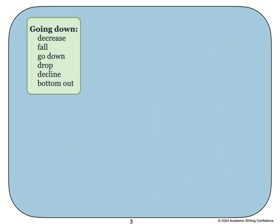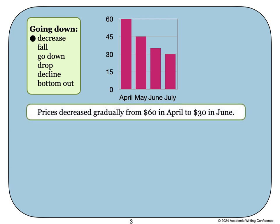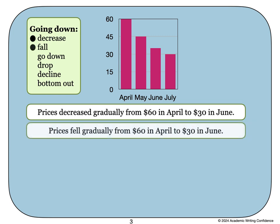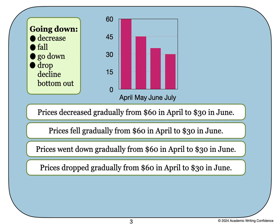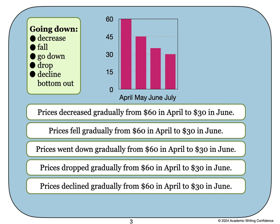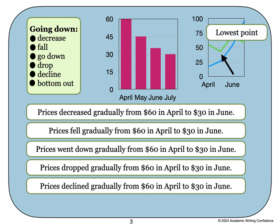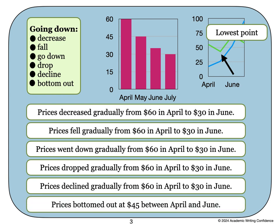We can do the same for our words describing information that is going down. Prices decreased gradually from $60 in April to $30 in June. Or we could say prices fell gradually. Or prices went down gradually. Or we could say prices dropped gradually. Prices declined gradually. Again, the words bottom out are used to describe what information shows the numbers go down the most. This is the lowest point of the graph. Our sentence might be something like this: Prices bottomed out at $45 between April and June.